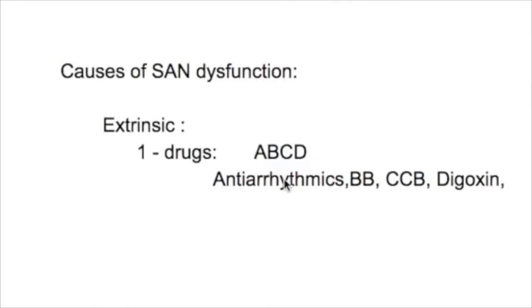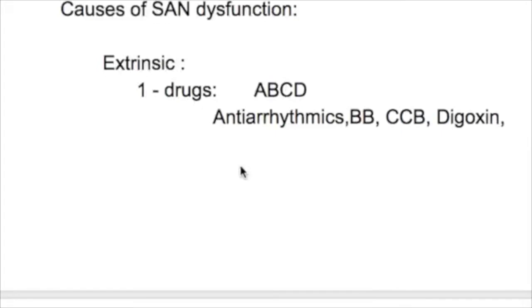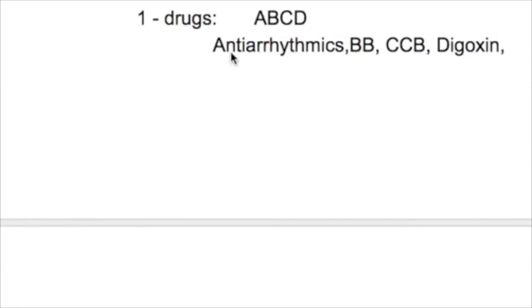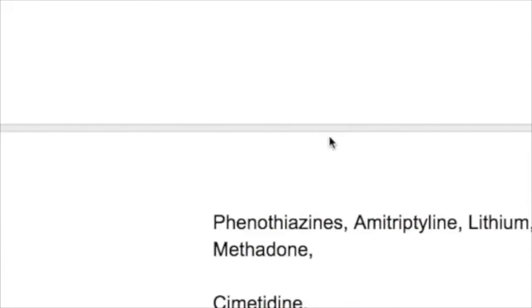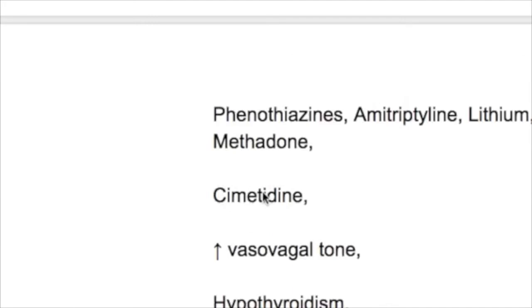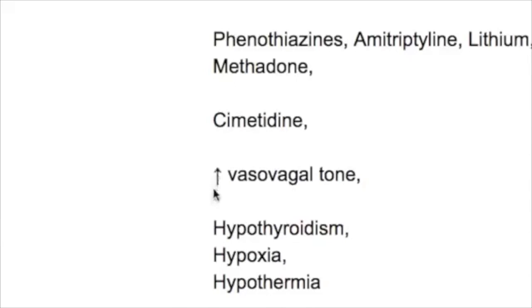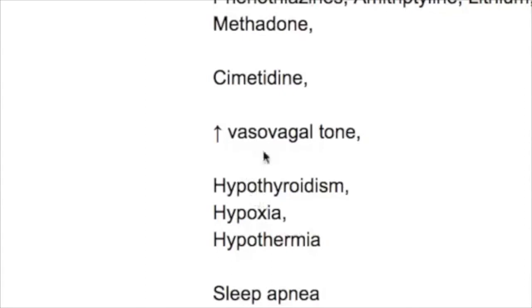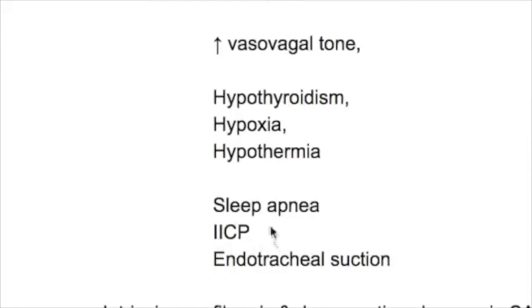The causes of sinus node dysfunction are extrinsic and intrinsic. Extrinsic causes include antiarrhythmic drugs (class 1 and 2), beta blockers, calcium channel blockers, and digoxin. Drugs used in psychiatric patients such as phenothiazine, amitriptyline, lithium, and methadone are also causes. The antacid cimetidine causes sinus node dysfunction. Other extrinsic causes include hypoxia, hypothermia, hypothyroidism, increased vagal tone, increased intracranial pressure, and endotracheal tube suction.